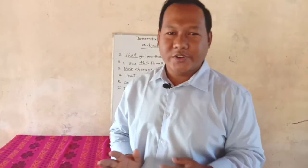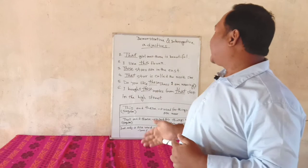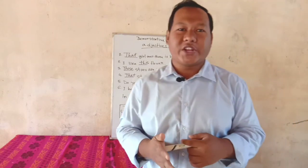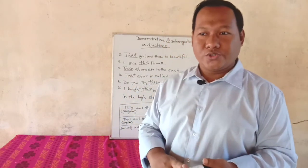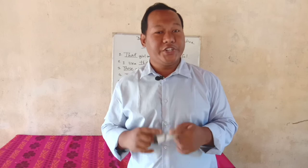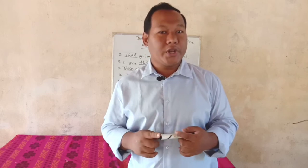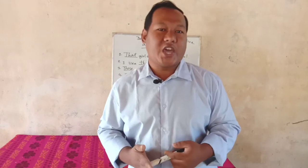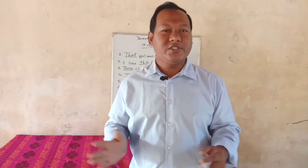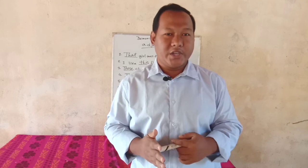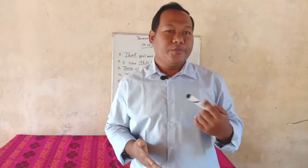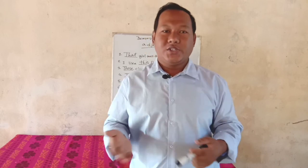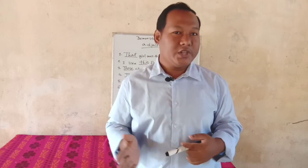I hope now it is clear what demonstrative and interrogative adjectives are. You can simply use these words — this and these, that and those. But remember, check whether the noun is singular or plural. If you can identify the noun properly, and you have good knowledge of demonstrative words, it is very easy to use them correctly. Practice this at home — the more you practice, the more expert you will become. This is all for today. See you in the next class. Bye.